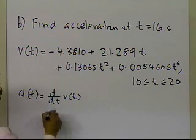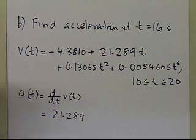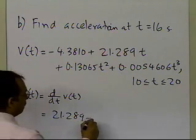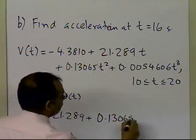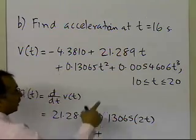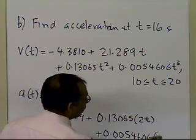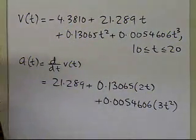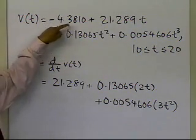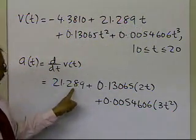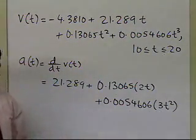The derivative of this velocity will be: this will be 0, the derivative of t is just 1, then the derivative of t squared will be 2t, and of course the derivative of t cubed, 0.0054606, will be 3t squared. You're differentiating each of the individual terms of the third-order polynomial. This gives you 0, this gives you 1, so that's 21.289, this gives you 2 times t right there, and this t cubed gives you 3 times t squared.